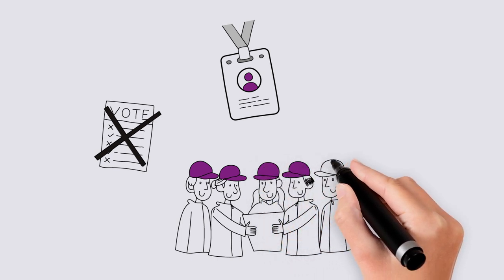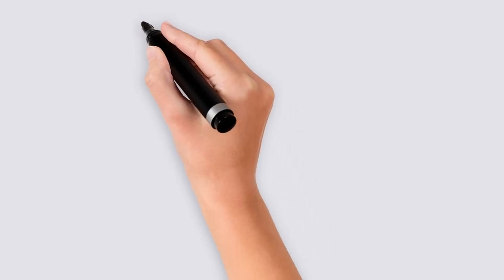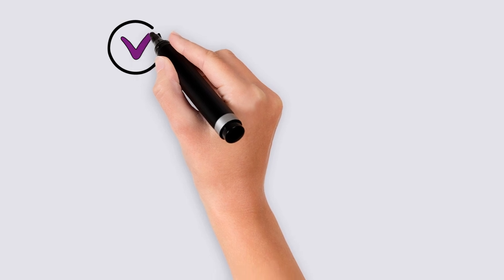If members approve the changes, then your association is ready to lodge the new document. The new constitution is not able to be used until it has been lodged and assessed as compliant with the legislation by the NT Government Association's compliance team.